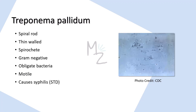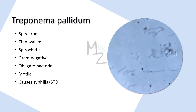Treponema pallidum is a spiral rod, which means it is spiral in shape. It is thin-walled and is a spirochete. Spirochetes are a group of bacteria which are long and thin, and contain endoflagella — a band of protein filaments coiled within the spirochetes — which gives them a spirally shape, just like a curly french fry. Endoflagella also helps spirochetes move around by spinning or twisting.